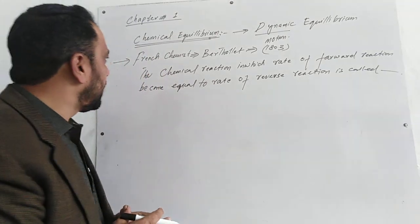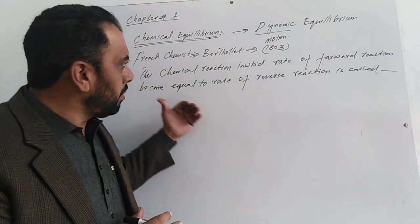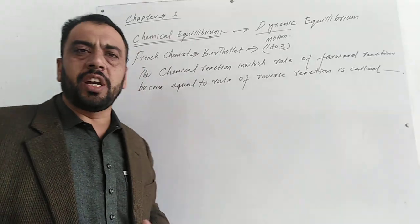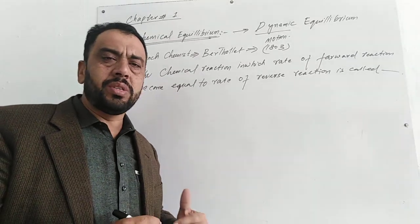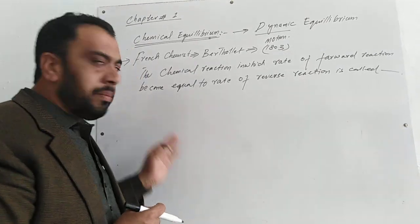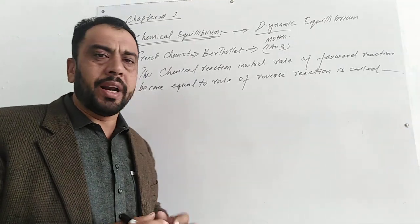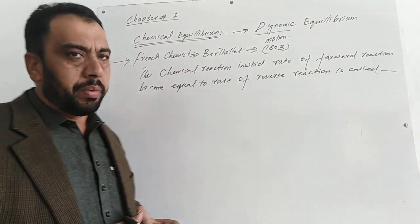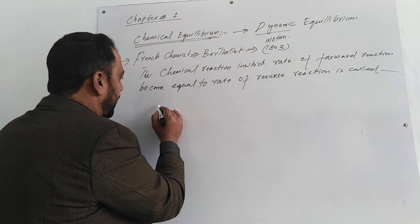A chemical reaction in which the reactants are continuously changed into products and products are continuously changed into reactants, but the amount of reactant and product remain constant, is called chemical equilibrium. We have a general example.